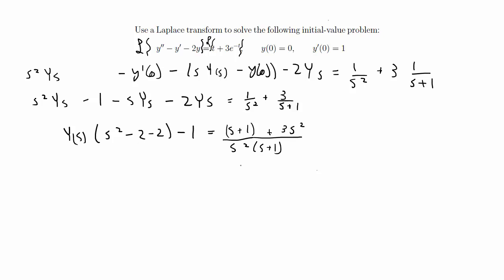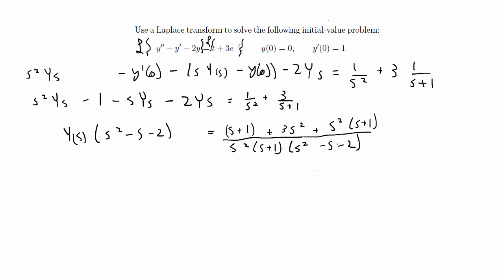Now we want the left hand side to just have Y(s) and move the rest to the right hand side. We add 1 and combine it with the rest: s squared·Y(s), and that moves to the right hand side. Then we divide by s squared minus s minus 2. And now if this problem were easy you could recognize this as an inverse Laplace transform, but it's not recognizable yet — we'll have to do partial fraction decomposition to get it into recognizable pieces.